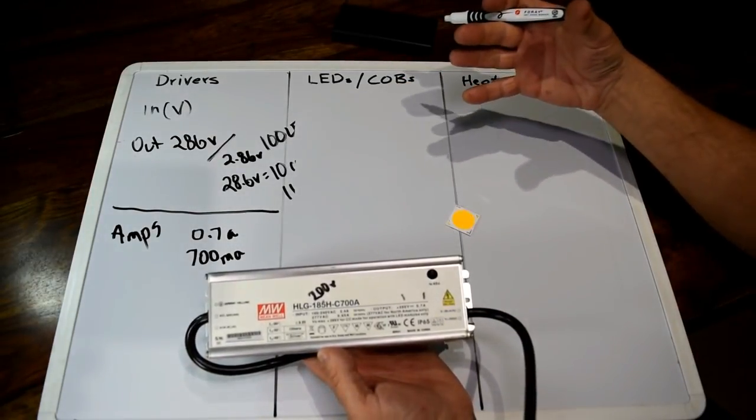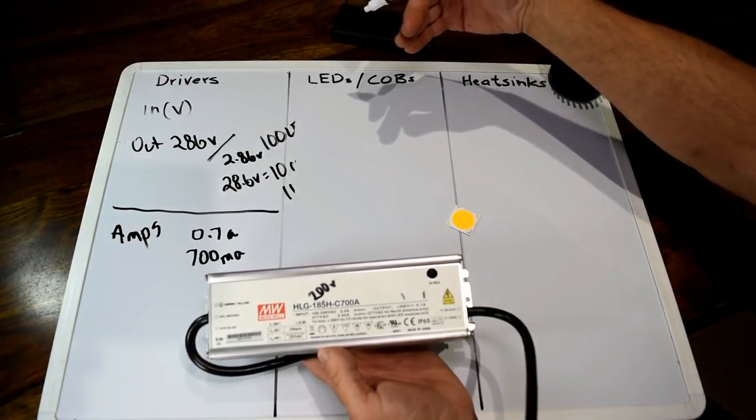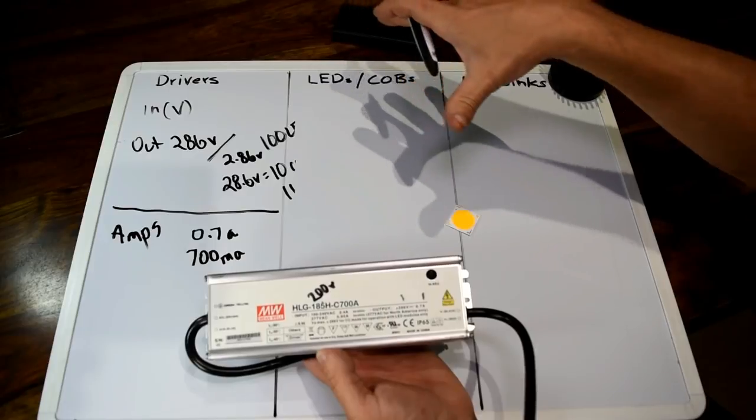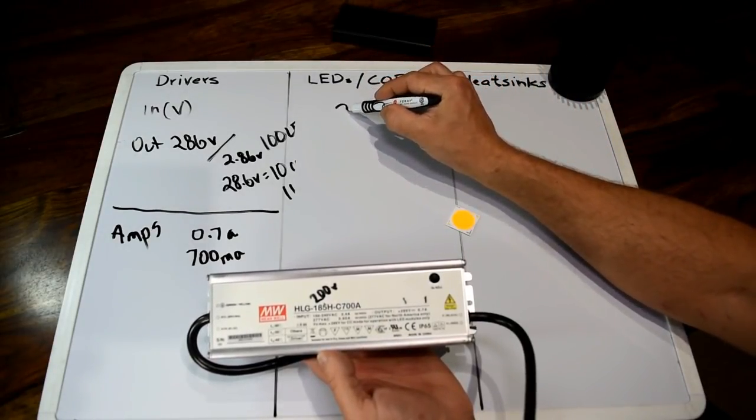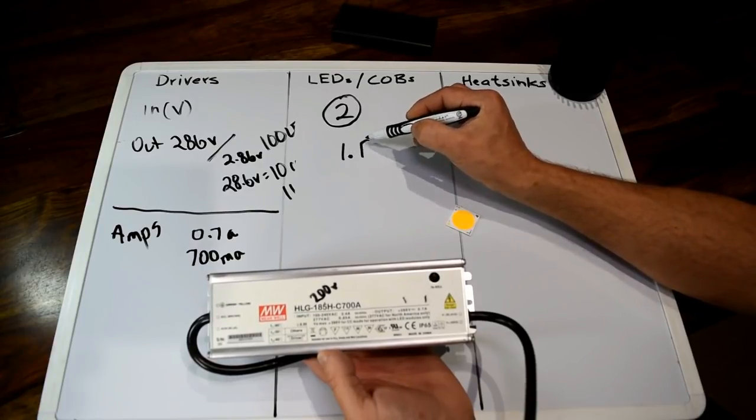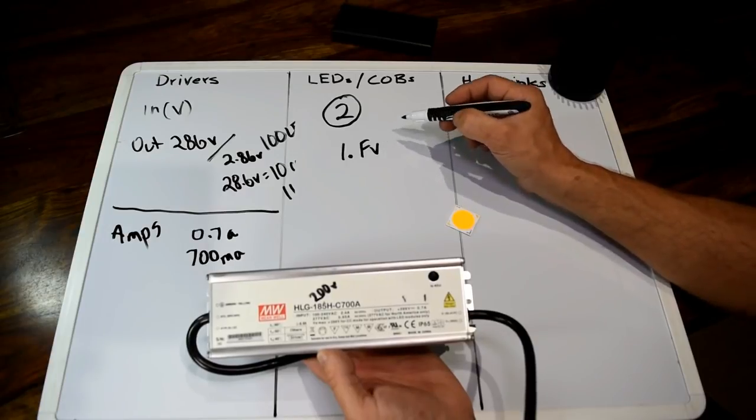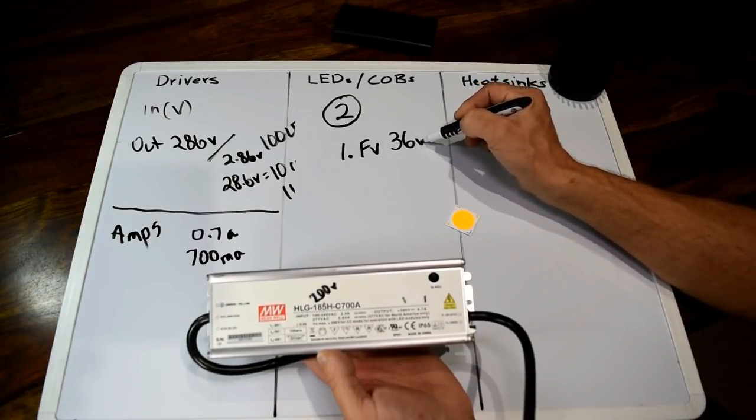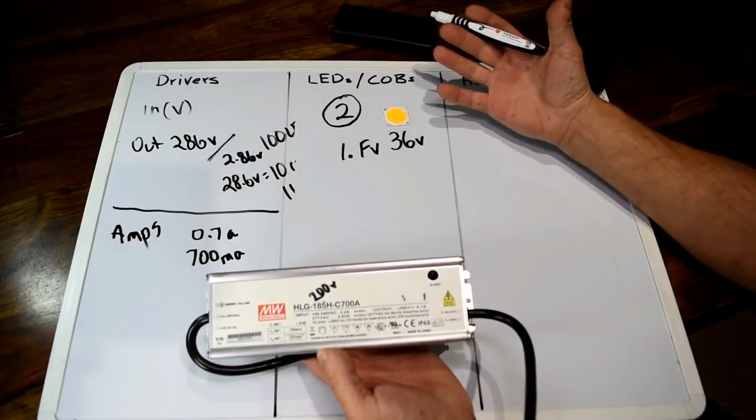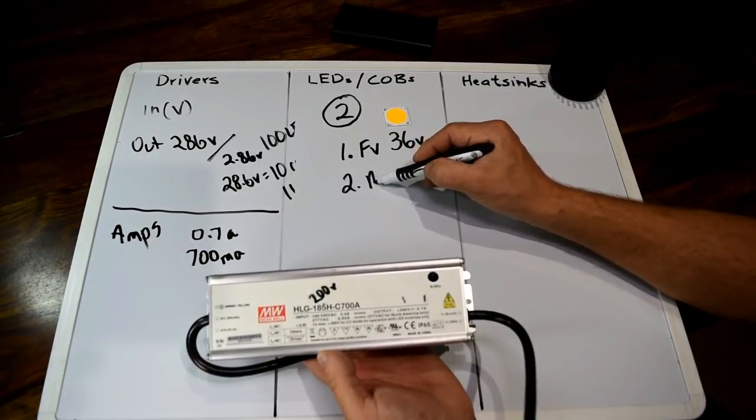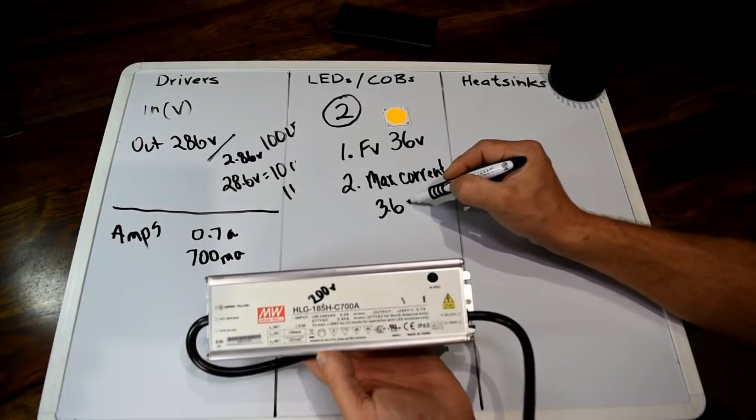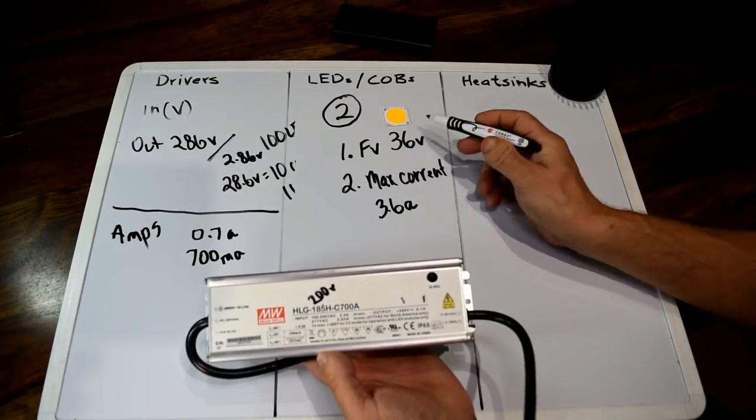When it comes to the amperage, this particular driver is 0.7 amps, which is the same as saying 700 milliamps. That is the strength that this driver will drive the LEDs. When selecting LEDs, there's only two things you care about. Number one: what is its forward voltage, abbreviated FV? For most of the Crees and newer COBs, that's going to be 36 volts. That is the minimum number of volts that the LED needs to emit light—without it, it's not going to emit light at all. The second thing is: what is its maximum current that it can take? A lot of these are 3.6 amps. If you supply 3.7 amps to this LED, it will blow, it will fry, it will catch on fire.